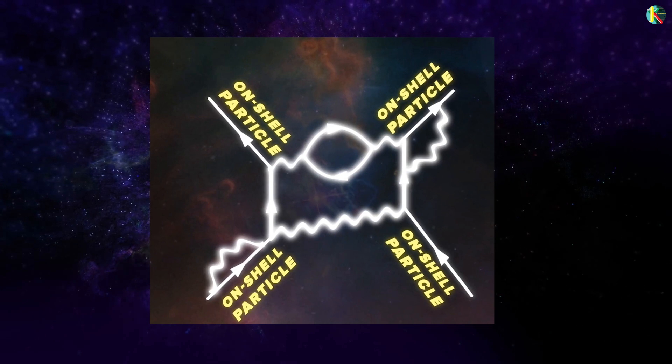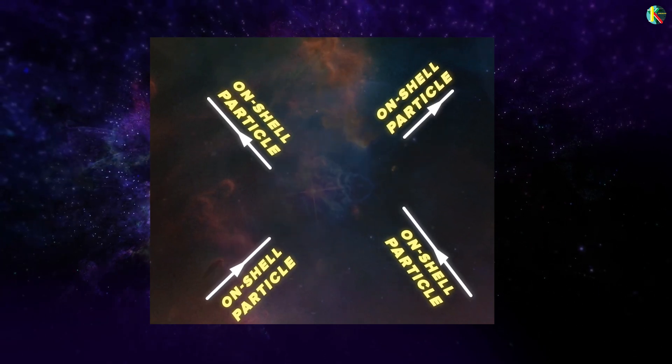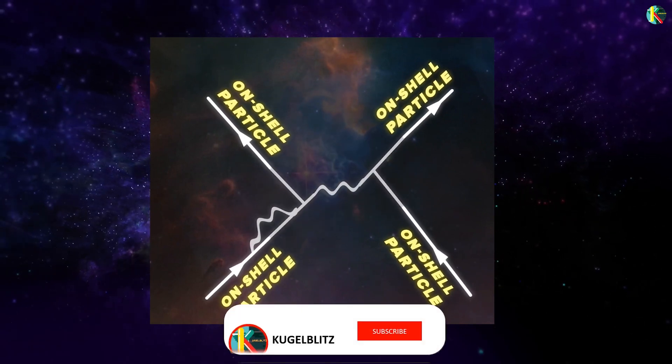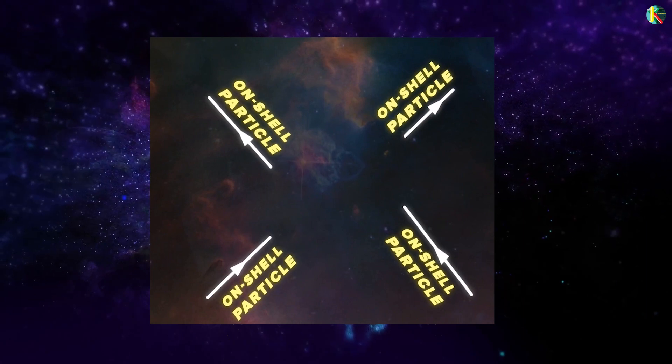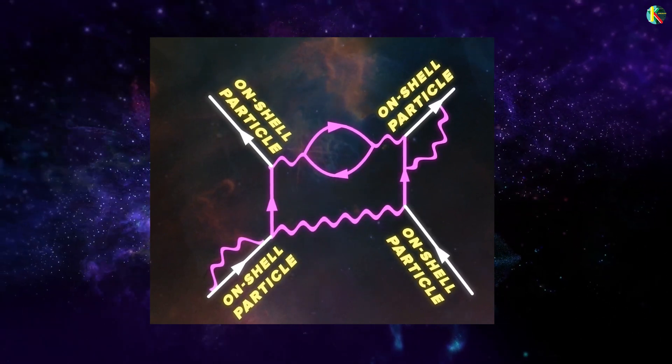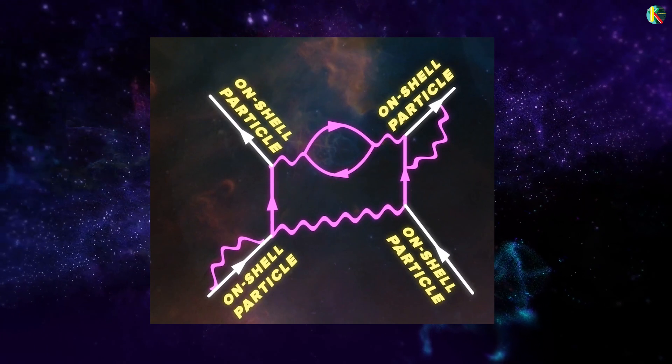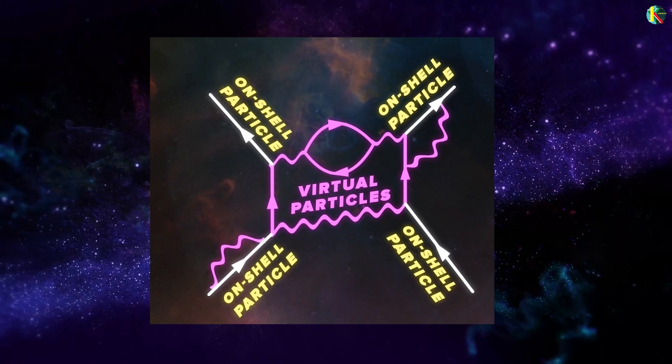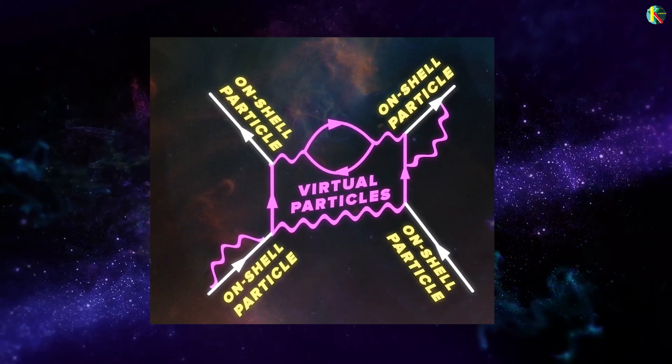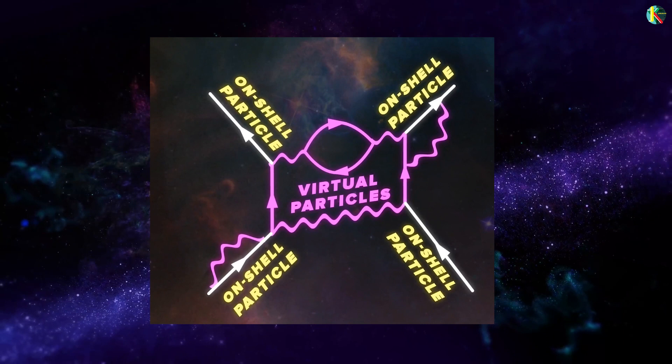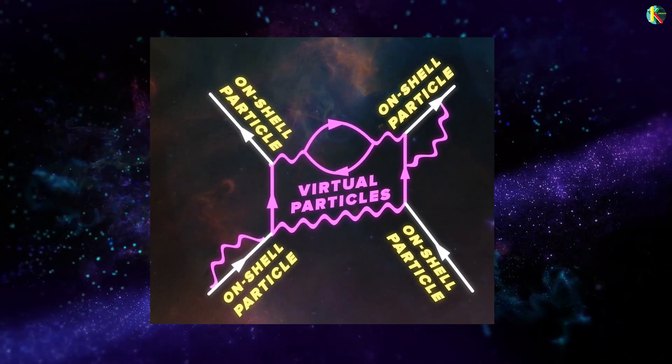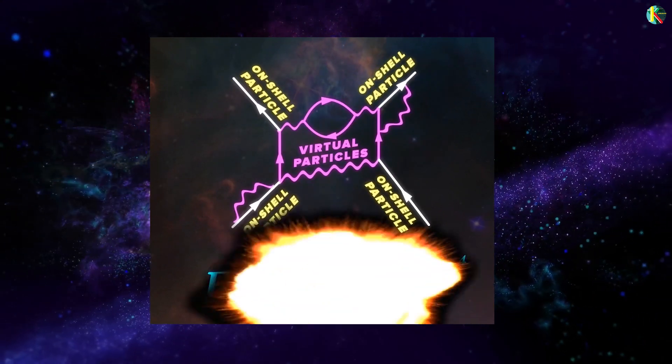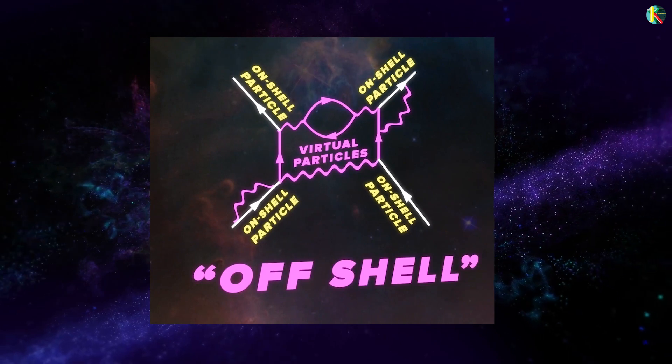On the other hand, everything that happens between ingoing and outgoing tracks has questionable reality. Each possible diagram is a valid part of the possibility space for that interaction. The particles that have their entire existence between vertices within the diagram but don't enter or leave are called virtual particles. Their correspondence to anything resembling real particles is debatable. They are also by definition, unmeasurable. Otherwise, they would be one of our ingoing or outgoing particles. These particles do not obey mass-energy equivalence. So, they are called off-shell particles.